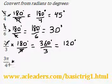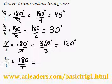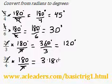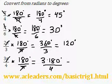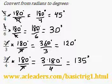And we have 3pi over 4. Multiply it by 180 over pi again. The pi's cancel out and we get 3 times 180 divided by 4 degrees. So 3 times 180 divided by 4 is 135 degrees. That's it.